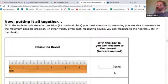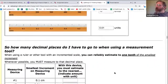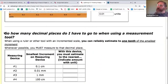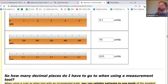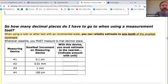So once we've done that, now the question is, how many decimal places do I have to go to? When using a ruler with an incremented scale or any other tool like a weight scale, you can reliably estimate to one-tenth of the smallest increment. We found the smallest increment up here. This is what we found, the smallest increment. You can always go to one-tenth of that. You can estimate between the lines.